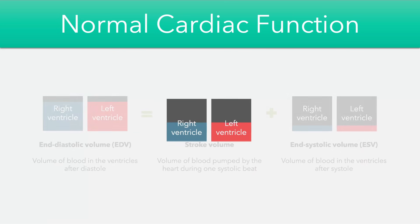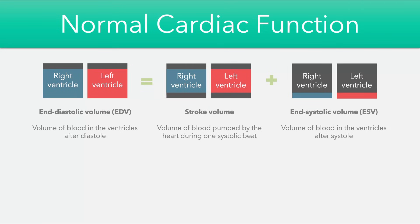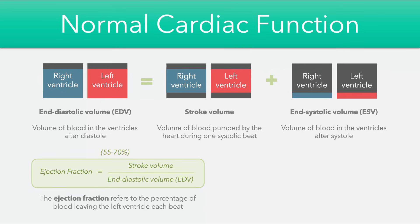To put all of these definitions in one place: the end diastolic volume equals the stroke volume plus the end systolic volume. These values are important because they help us calculate other markers of cardiac function. For example, the ejection fraction is calculated by dividing the stroke volume by the end diastolic volume, giving us the percentage of blood leaving the left ventricle at each beat. The normal value for ejection fraction is usually about 55–70%.